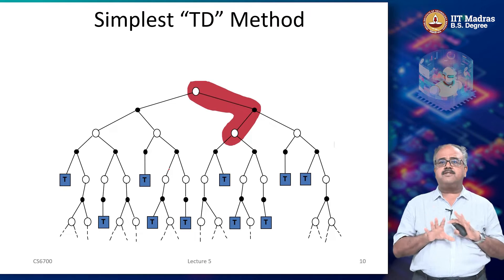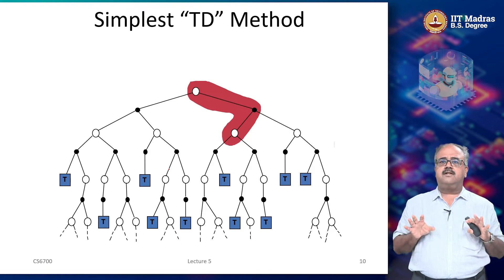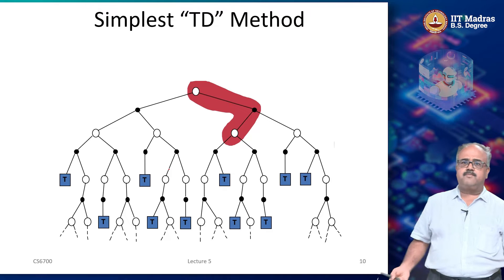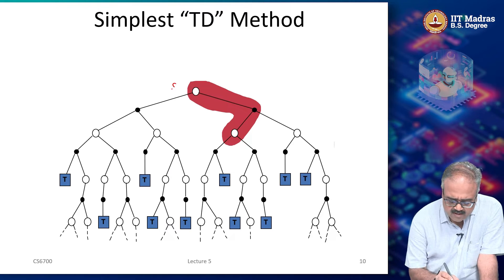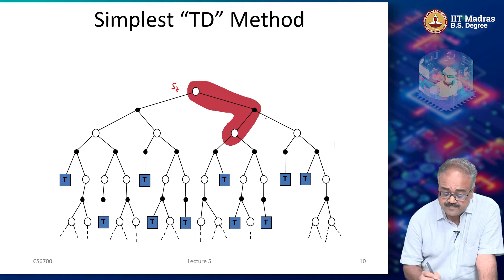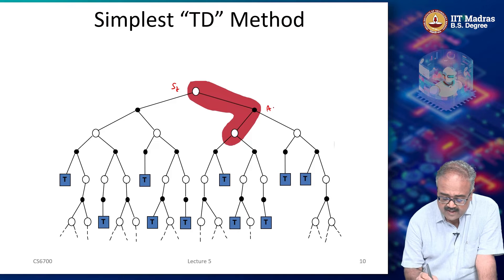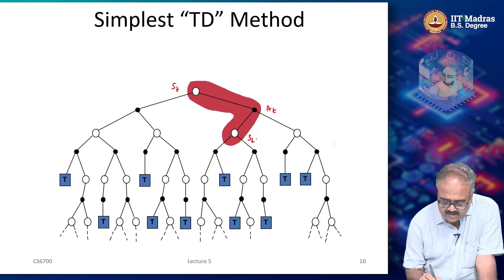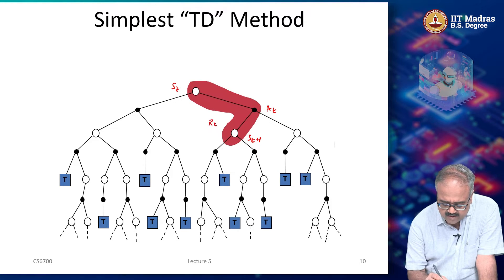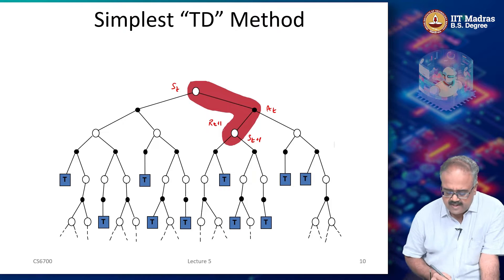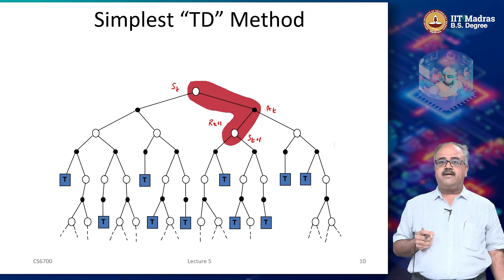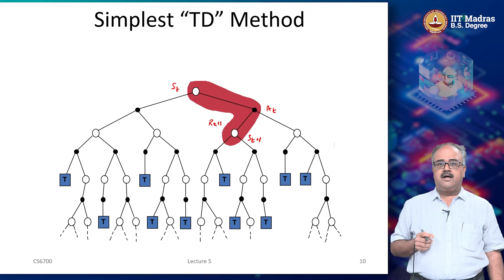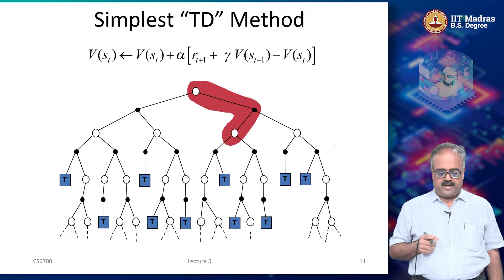We have the simplest possible temporal difference method. The simplest possible TD method is: you start off with some state S_t, take an action A_t, and then you get to a state S_{t+1}, and along the way you get a reward R_{t+1}. Just using these four quantities, you can define a TD update.